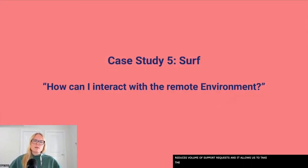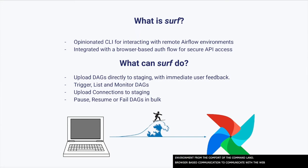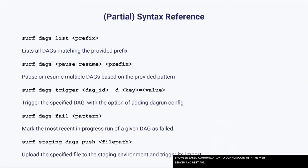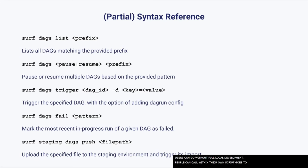We built Surf as an opinionated CLI and client library for Airflow, which allows users to interact with the remote Airflow environment from the comfort of their own command line. It includes a browser-based web authentication flow, which allows it to communicate securely with the Airflow web server and, by extension, the Airflow REST API. We've built out opinionated commands for triggering DAGs, pausing groups of DAGs based on a regex of the DAG ID, or uploading jobs to the staging environment. The staging upload is particularly interesting because we implemented a custom API endpoint which pulls a file down to the staging environment and processes it on demand, giving users immediate feedback on errors without a full local development environment. Surf is also distributed as a regular Python library so people can call functions directly within their own scripts.